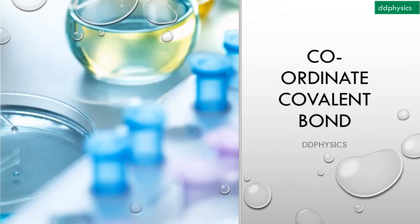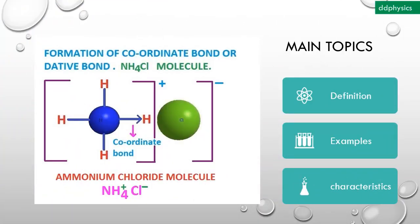Today, we are going to understand what is coordinate covalent bond. In this video, we cover what is the definition of coordinate covalent bond, what are the examples and characteristics of coordinate covalent compounds.